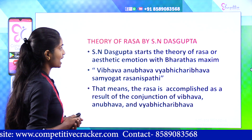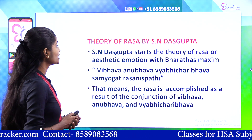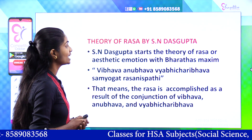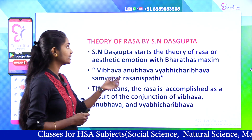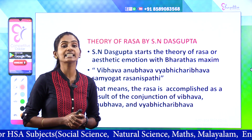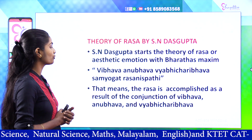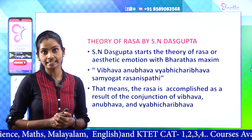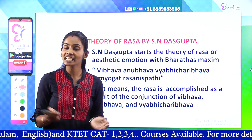The Theory of Rasa by S.N. Gupta starts with Bharata's Maxim. Bharata's Maxim explains the theory: Vibhava, Anubhava, Vyabhichari bhava, Samyogat, Rasa nishpatti. That means Rasa is accomplished as a result of the conjunction of Vibhava, Anubhava, and Vyabhichari bhava. This combination produces Rasa.